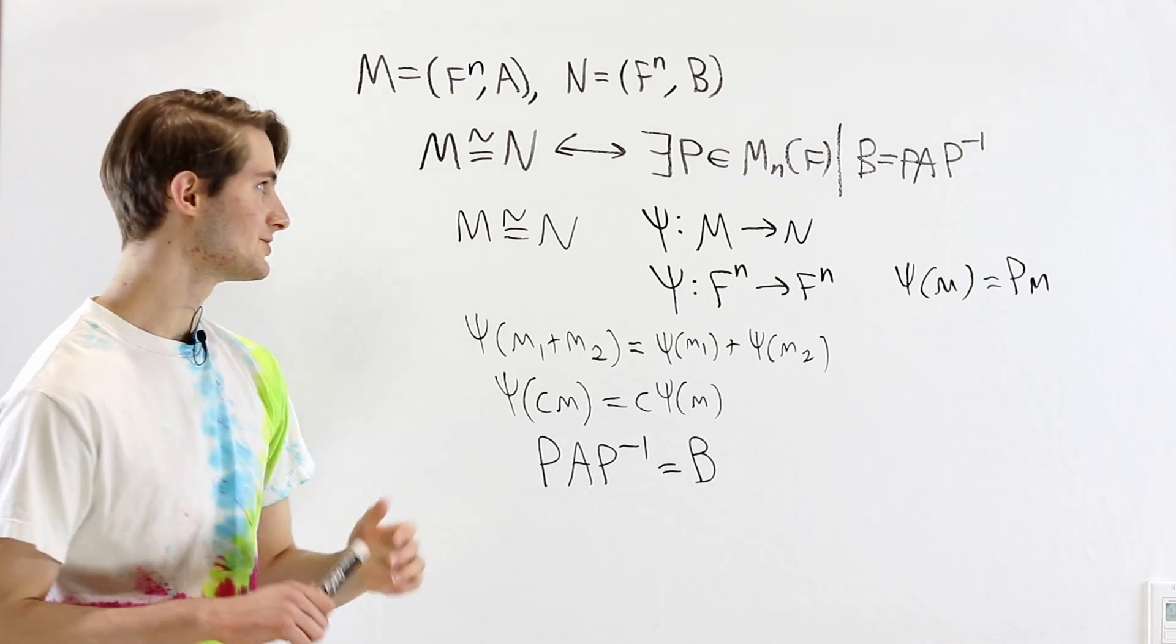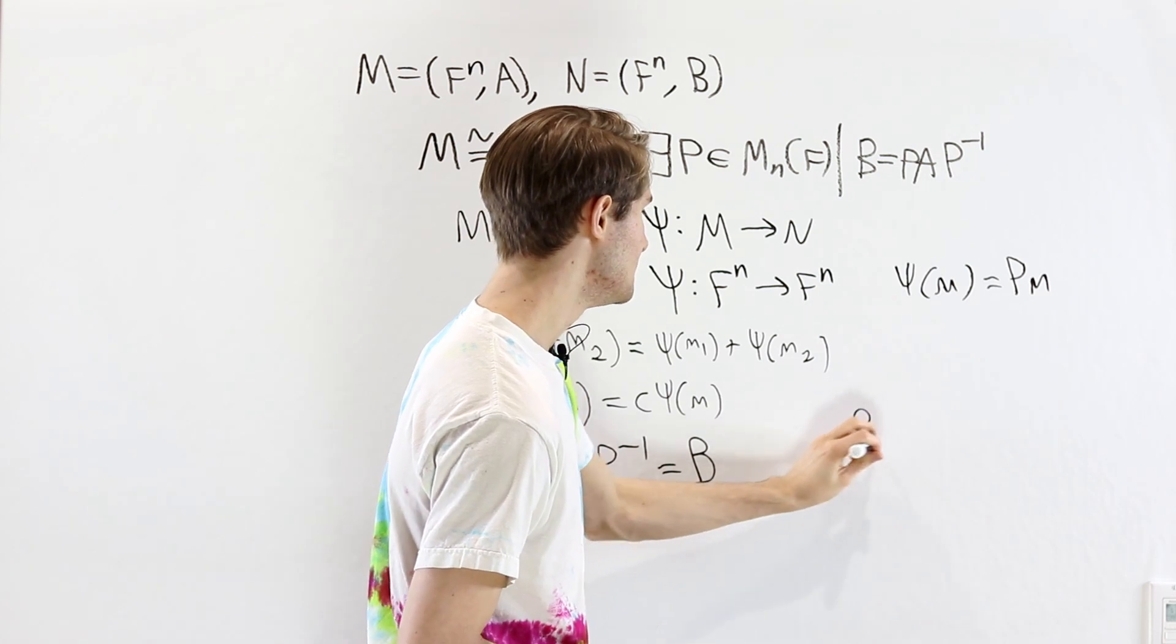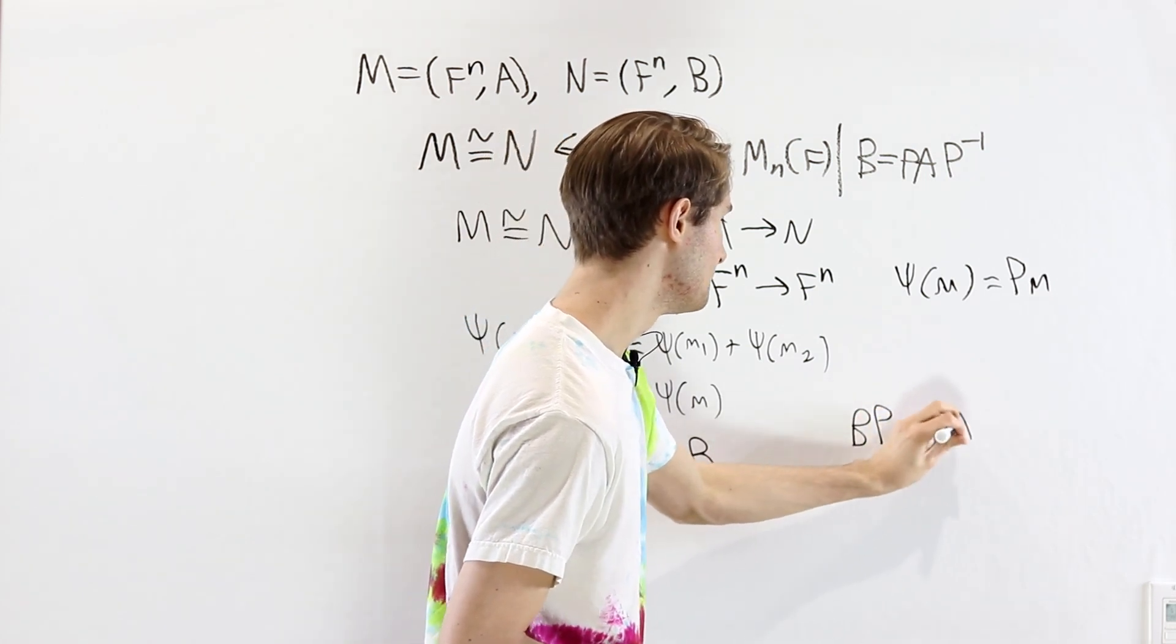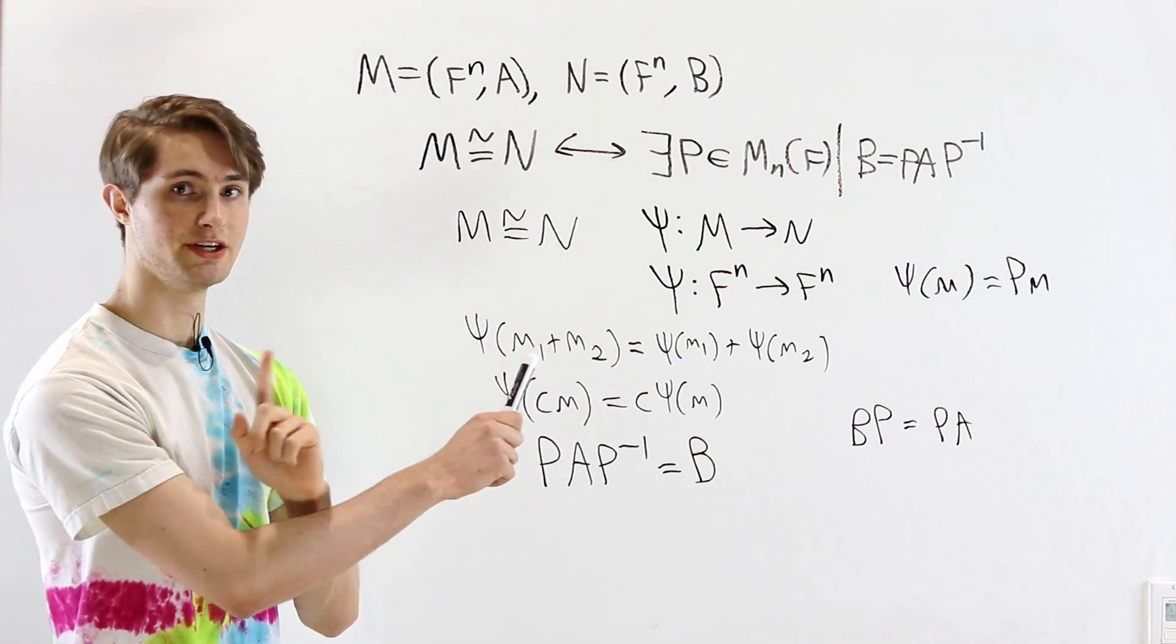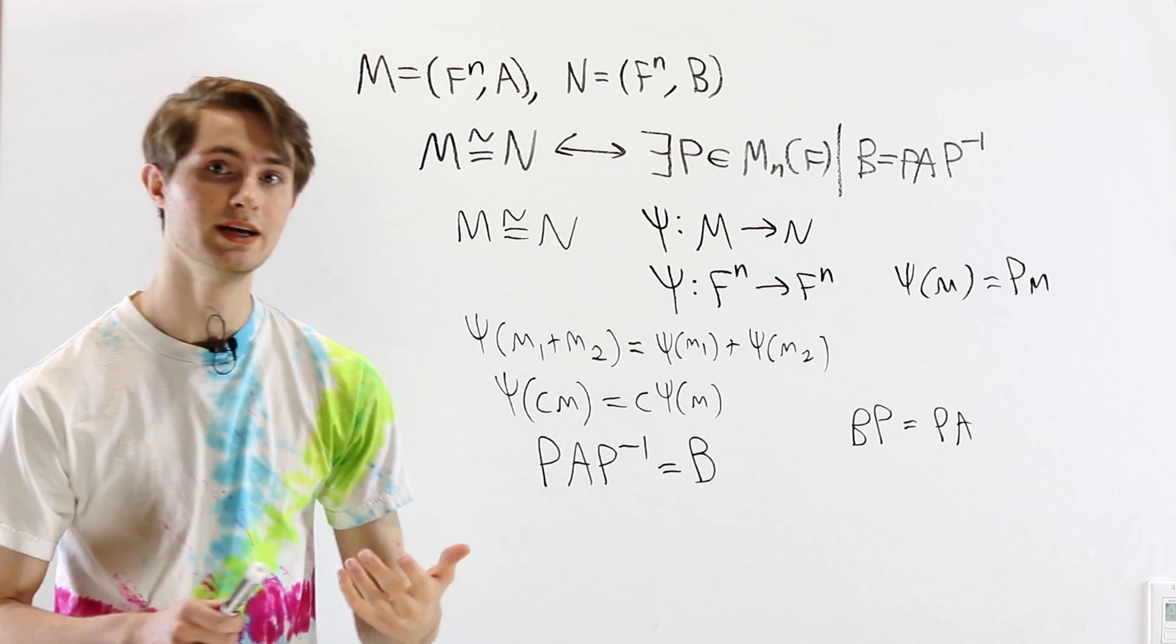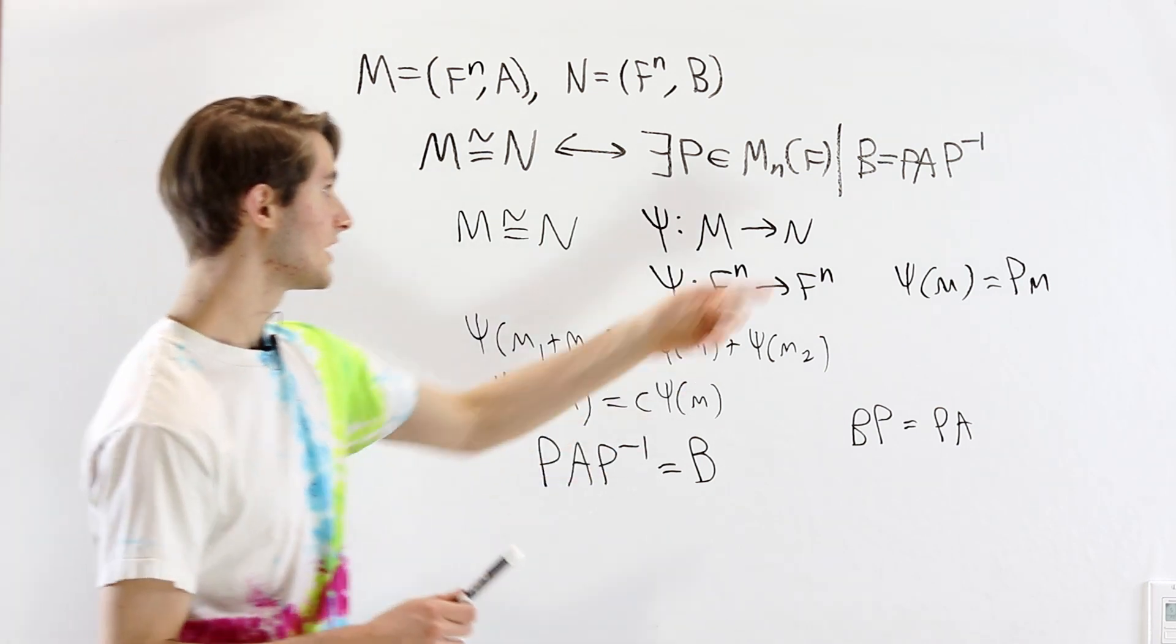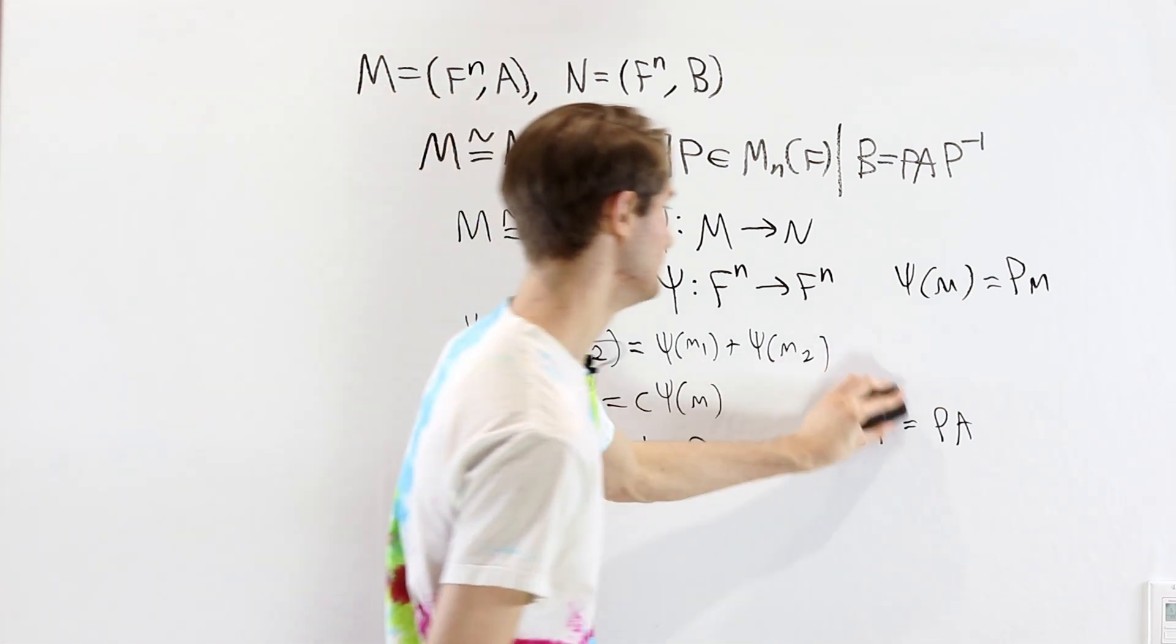But the fact is that the equation BP equals PA, this is really saying that ψ has to be linear in x. And so this equation is telling us exactly what an isomorphism has to be, along with the fact that it's a matrix, meaning that it is a linear transformation of the vectors.